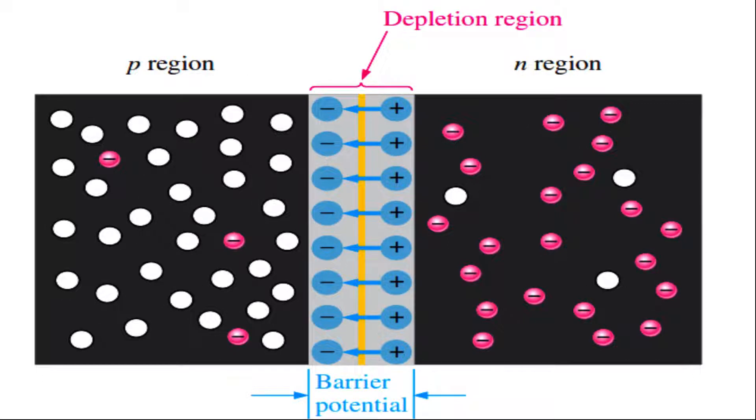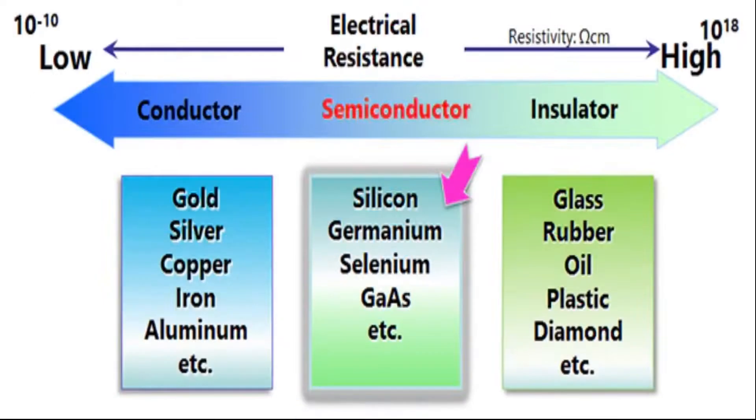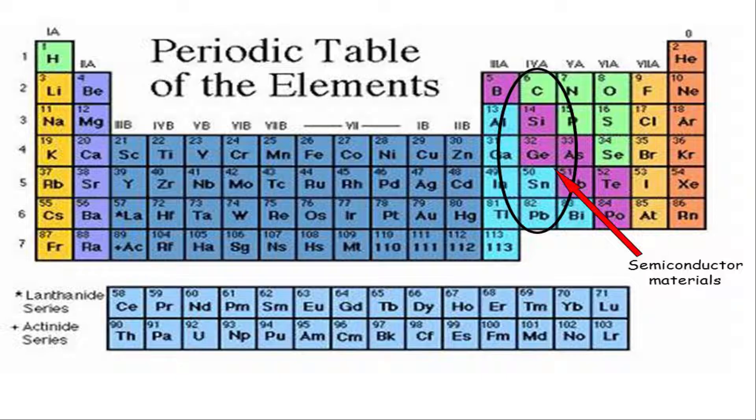The process of doping is explained in further detail in the next section. Semiconductors are materials which have electrical conductivity between conductors and insulators. Semiconductors can be pure elements such as silicon or germanium or compounds such as gallium arsenide or selenium.